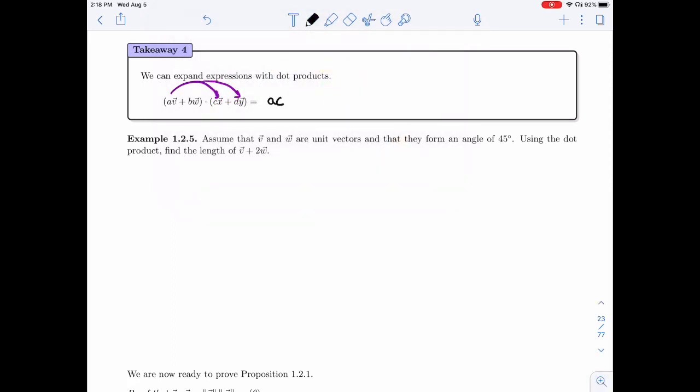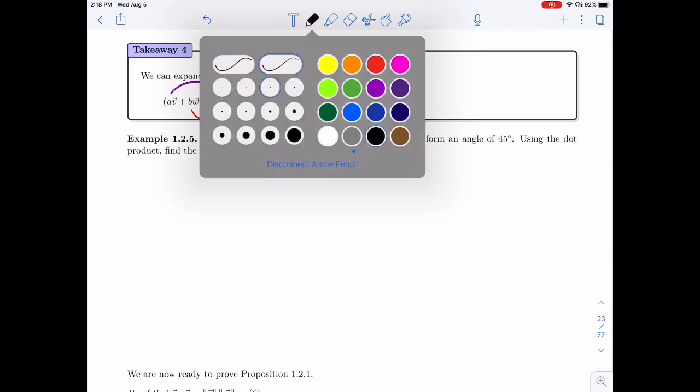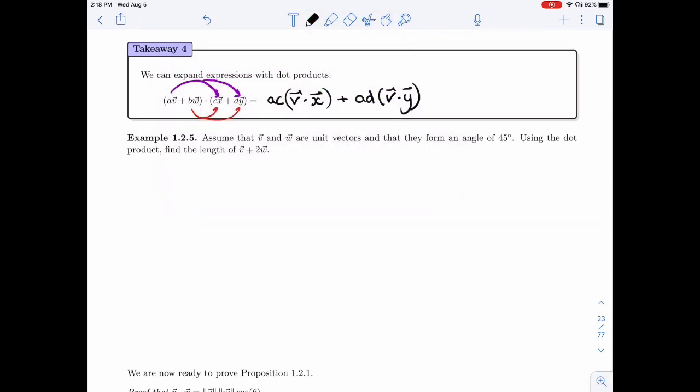So the first term would be ACV.X. So that's first. Then out will give you ADV.Y. So these are the first two terms. And then you'll get two more coming from B.W. So you'll get B.C.W.X plus B.D.W.Y.